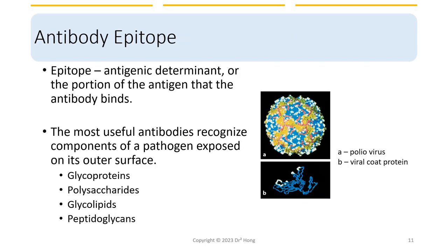In a general sense, we say the antibody binds to the antigen, but more precisely, the antibody binds to the epitope of a given antigen. When antibodies can bind to the outer surface component of a pathogen, they can participate in neutralization or opsonization — that's when they are most useful. Remember, antibodies can bind to a variety of biomolecules such as glycoproteins, polysaccharides, glycolipids, and peptidoglycans on the pathogen surface.